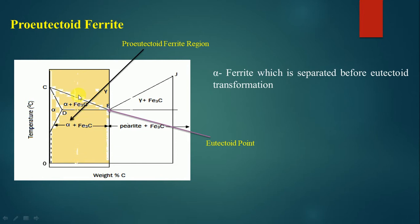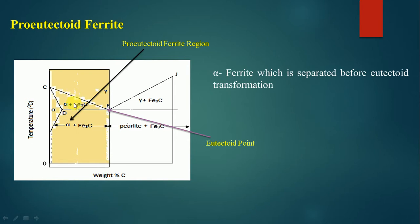At 0.2 percentage of carbon — where 0.008 is at one end and 0.8 at the other — considering the steel at 0.2% carbon, the structural changes during cooling would begin at a certain point where alpha ferrite starts to separate out at the grain boundaries of the gamma austenite.